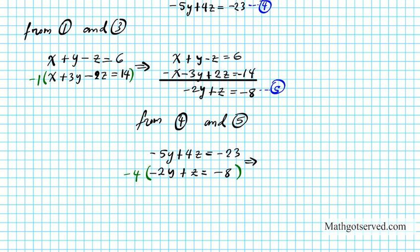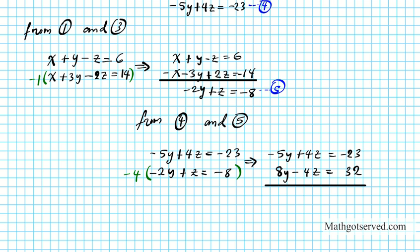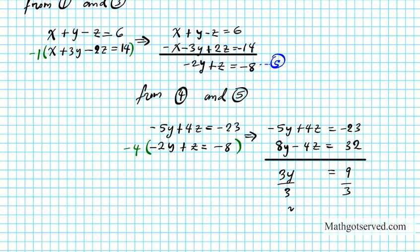Multiplying equation 5 by negative 4 gives 8y minus 4z equals 32. Combined with negative 5y plus 4z equals negative 23, the z's are opposites and add out to 0. Adding down gives 3y equals 9. Dividing both sides by 3, we get our first solution: y equals 3. Let's box it so we don't lose it.